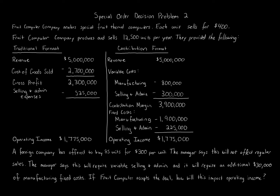This is a special order question. You know it's a special order because the facts tell you a company is trying to purchase a certain number of units — here, a foreign company has offered to buy 85 units. You also recognize a special order by looking at the normal sales price, which we're told is $400 per unit.